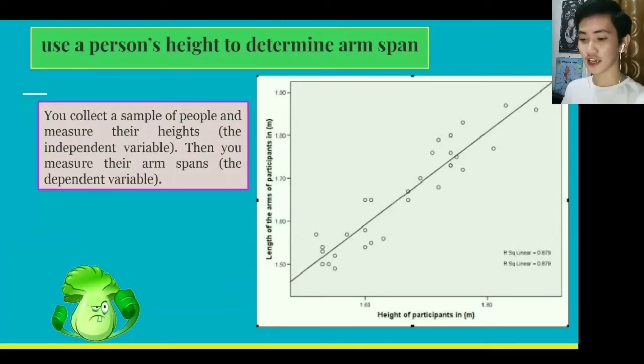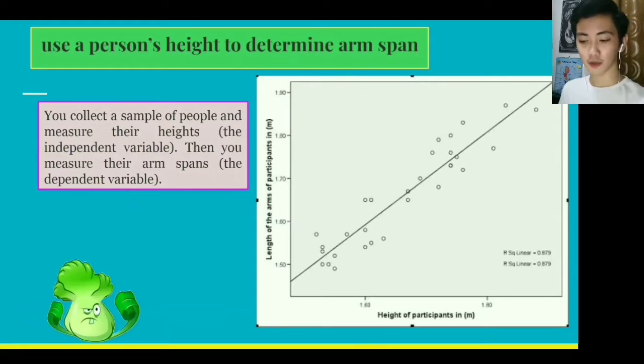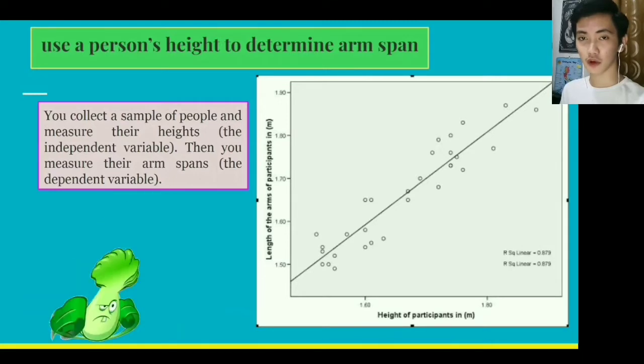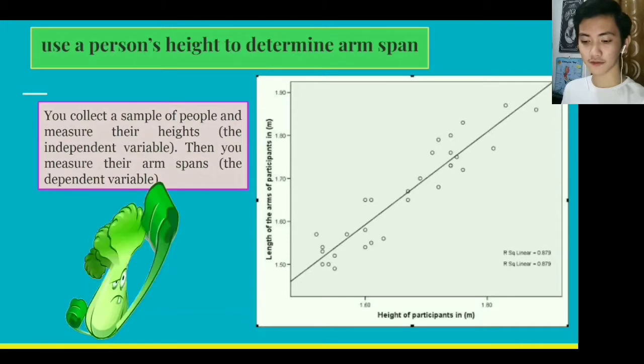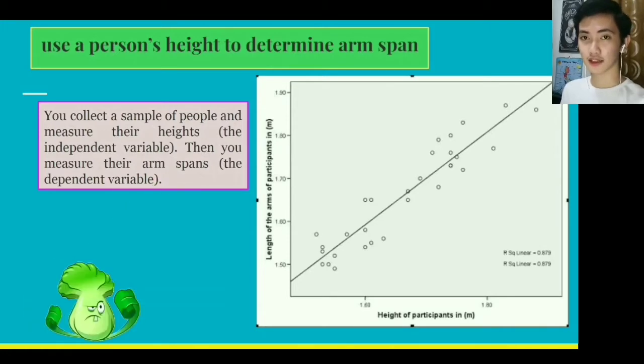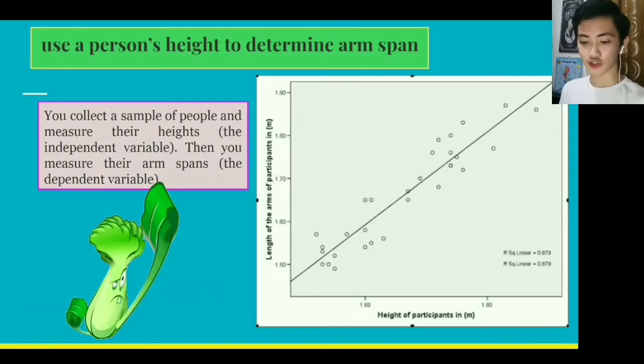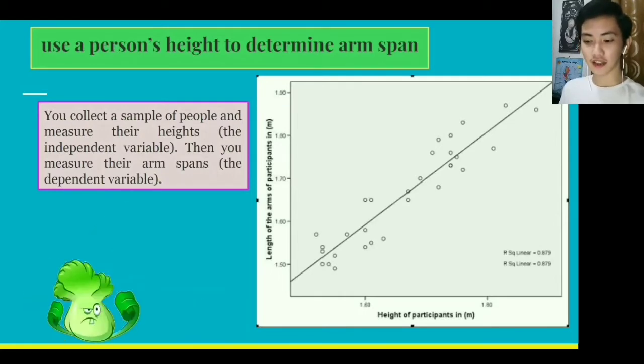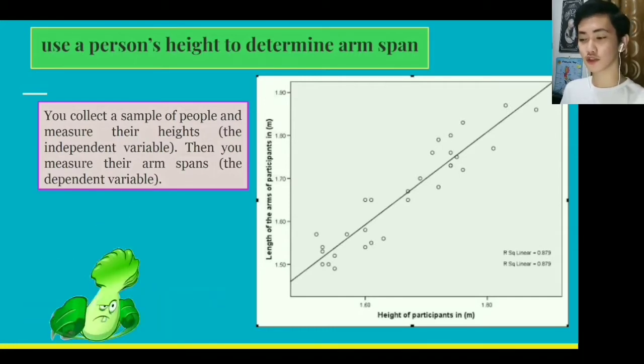We came up with a question: is a change in the independent variable related to a change in the dependent variable? To answer this question, you plot a graph with the independent variable along the x-axis. Also, you plot the dependent variable along the y-axis. So your graph might look like this, as you can see on the screen. You can draw a best fit line through the points. This indicates that the dependent variable, which is the arm span, depends on the person's height. That's the conclusion for the variable.